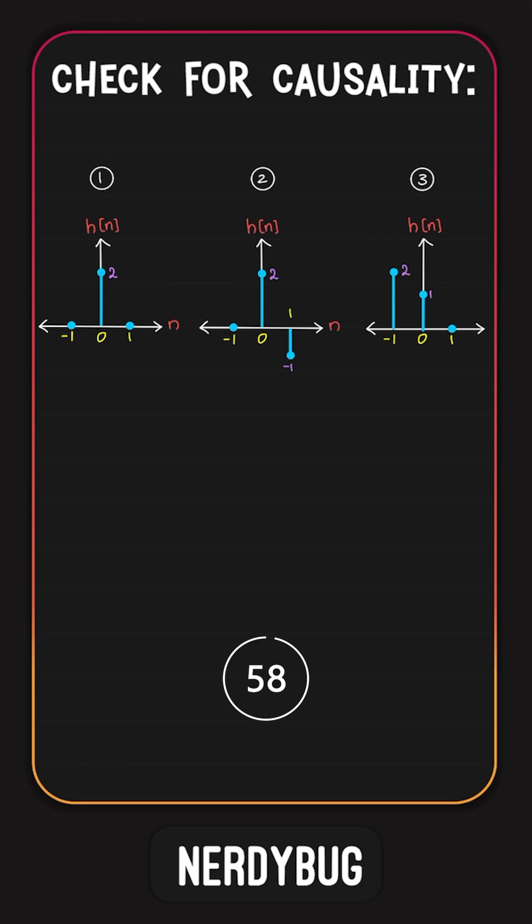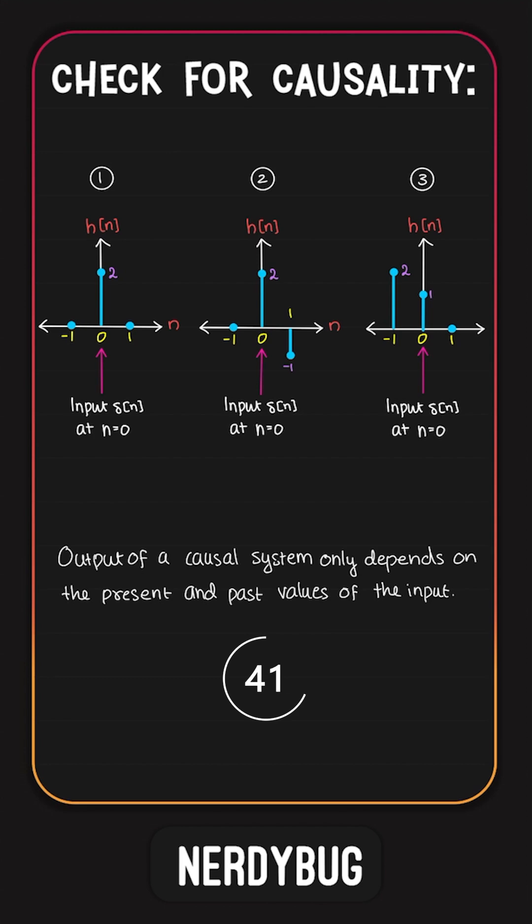Let us check the causality of these three systems from their impulse responses under 60 seconds. Impulse response is the output of a system when the input is an impulse. An impulse is non-zero only at n equal to 0. So in all these cases the input is given at n equal to 0. Output of a causal system should only depend on the present and past values of the input.